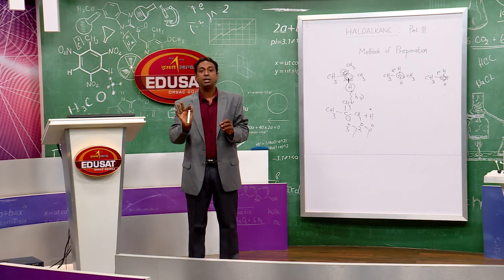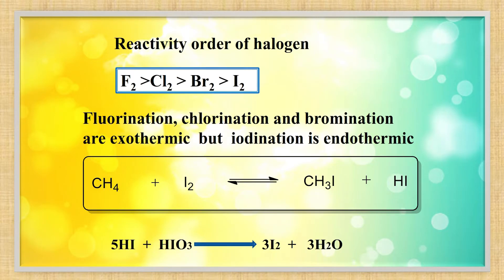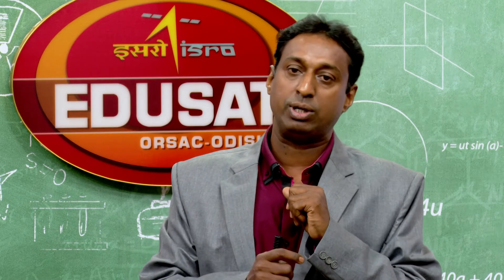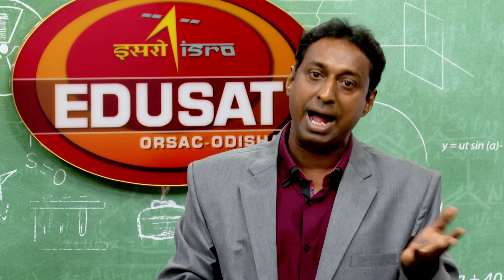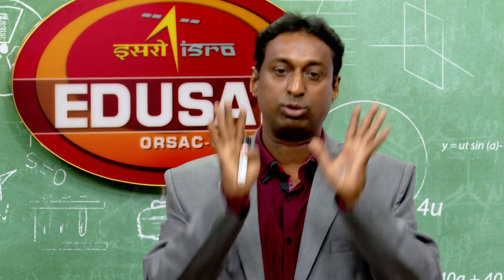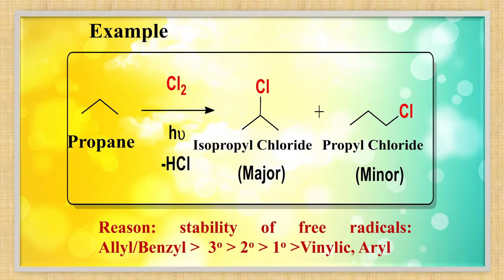Remember, halogens are very reactive, but among halogens fluorine is most reactive, then chlorine, then bromine, then iodine. Iodine reacts very slowly and the reaction is reversible: CH4 + I2 ⇌ CH3I + HI. To check reversibility, add an oxidizing agent like HIO3, HNO3, or HIO4 — then the reaction becomes irreversible and you can get methyl iodide. Fluorine, chlorine, and bromine react exothermically; iodination is endothermic.